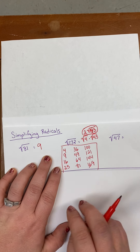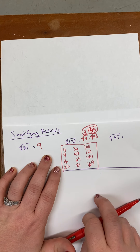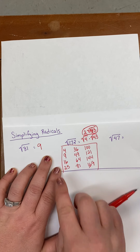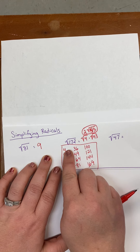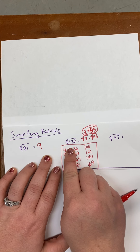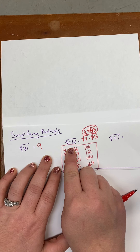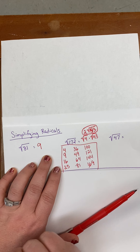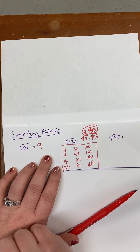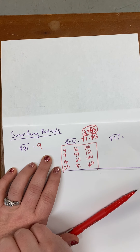If your problem asks for it in decimal form, you will just take 172, put it in your calculator, hit the square root button, and it will give you that answer.